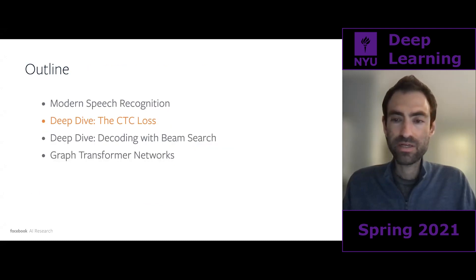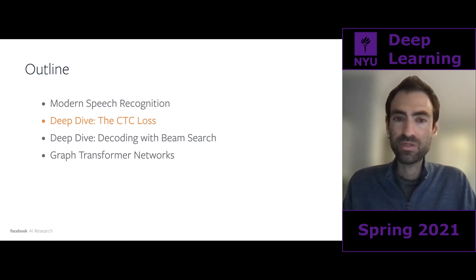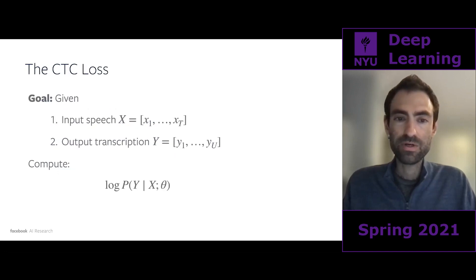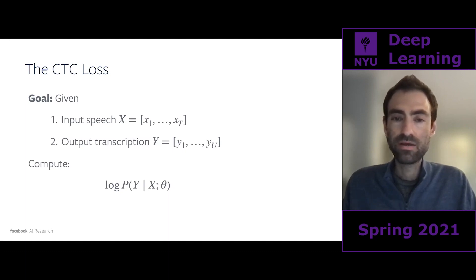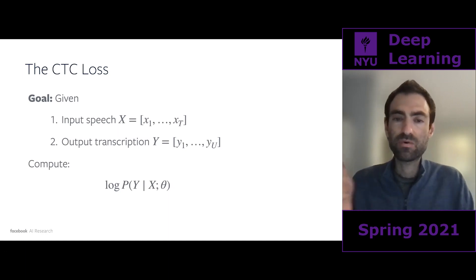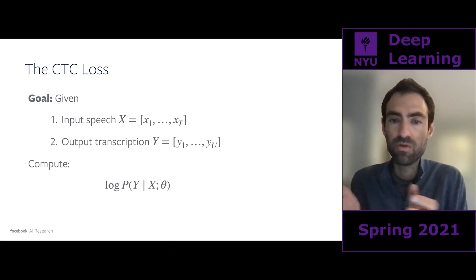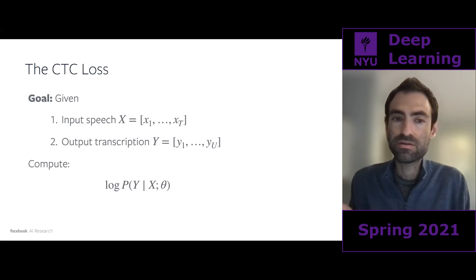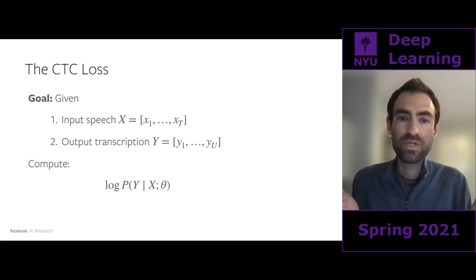Let's talk about connectionist temporal classification (CTC). CTC is one of the more commonly used loss functions for training state-of-the-art speech recognition systems. We're given some input speech — an utterance X consisting of T frames of audio, X1 to XT. Each frame is usually about 20 milliseconds of speech, overlapping slightly, and those are the features that go into the model. We desire to produce a transcription Y, consisting of letters Y1 through Y_U.